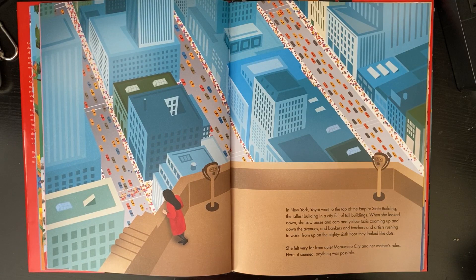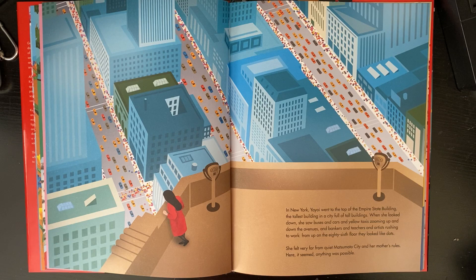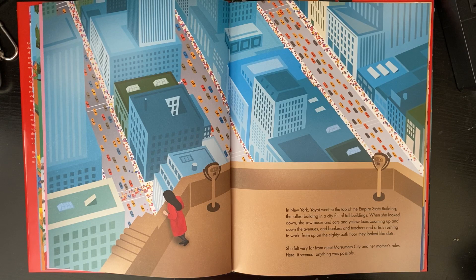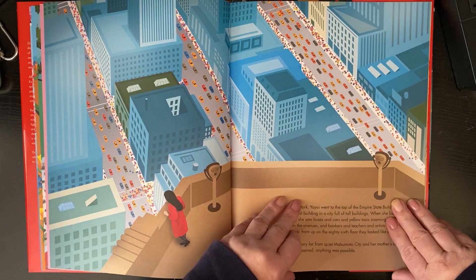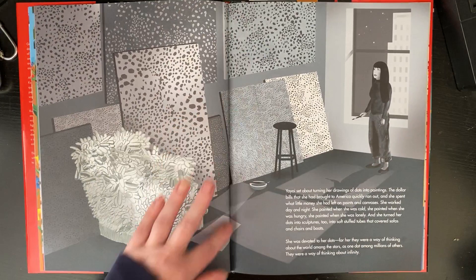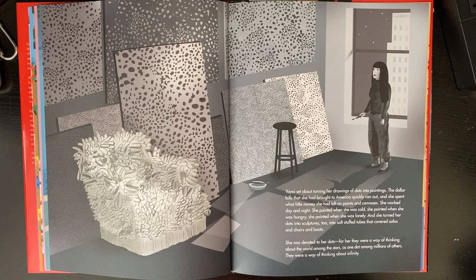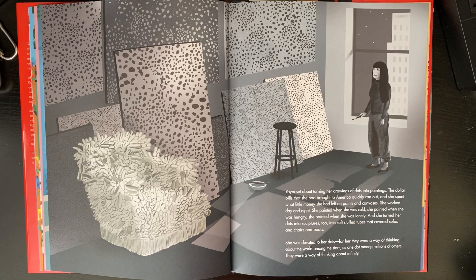In New York, Yayoi went to the top of the Empire State Building. When she looked down, she saw buses, cars, and yellow taxis zooming up and down the avenues, and people rushing to work. From up on the 86th floor, they looked like dots. She felt very far from quiet Matsumoto City and her mother's rules. Here it seemed anything was possible. Next day, Yayoi set about turning her drawings of dots into paintings. The dollar bills quickly ran out and she spent what little money she had on paints and canvases. She worked day and night, painting when she was cold, hungry, and lonely.